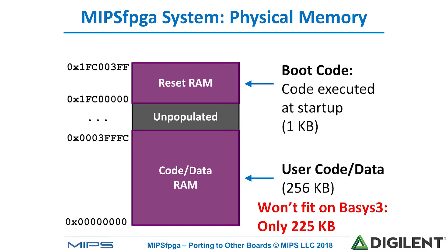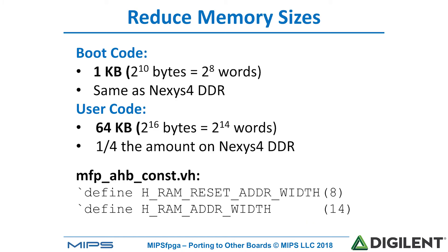That amount won't fit on the BASIS 3 board as it only has 225 kilobytes available altogether. But that's no problem — we can simply reduce the size of the user code. We leave the boot code at 1 kilobyte and reduce the user code to 64 kilobytes. We do this by changing the constants in the MIPS FPGA HP constants file, mfphbconst.vh.